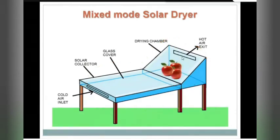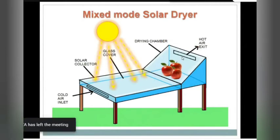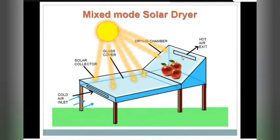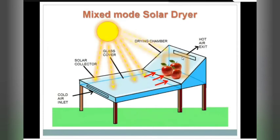In the mixed mode solar dryer, the fruits are placed inside and the sun rays fall on both the solar collector and the drying chamber. The air entering from the cold air inlet gets heated and enters the drying chamber, heating up the total area. This heating effect is caused both by the movement of air from the solar collector and by the sun rays directly falling on the drying chamber. The hot air vaporizes the moisture, and the hot air with moisture is expelled from the hot air exit.